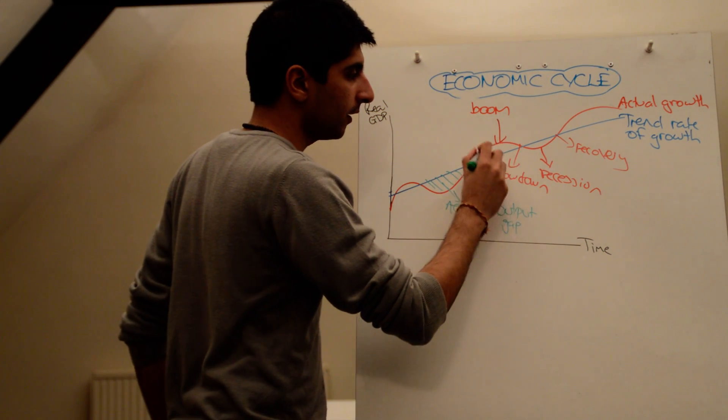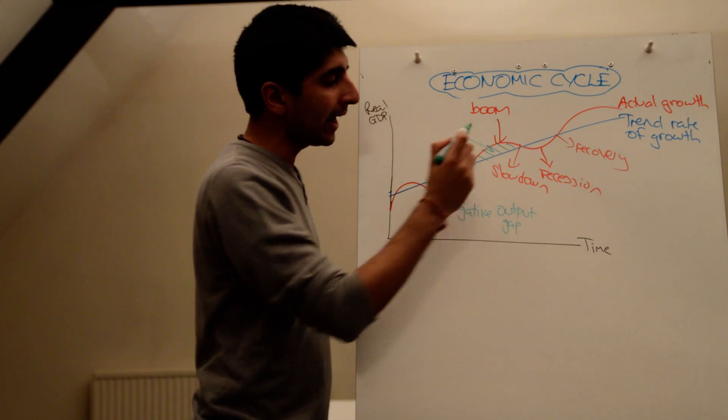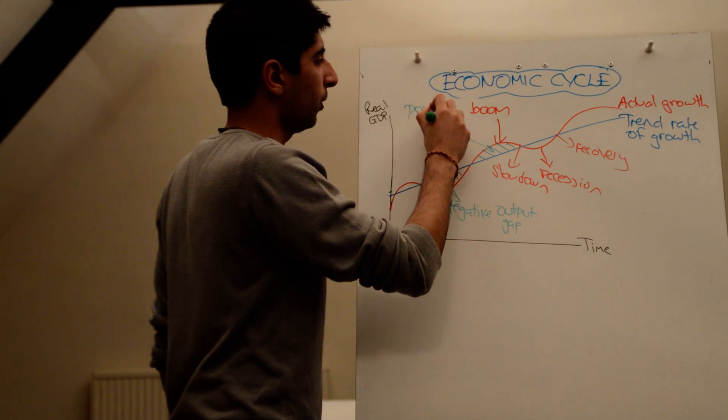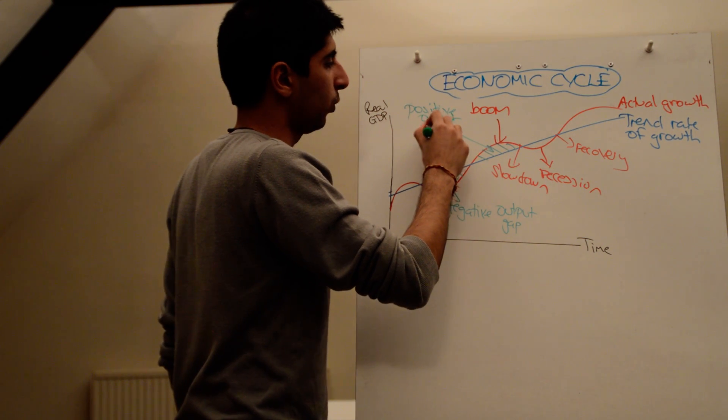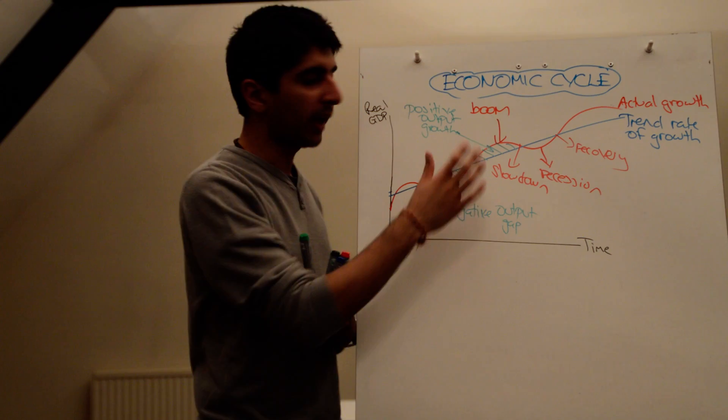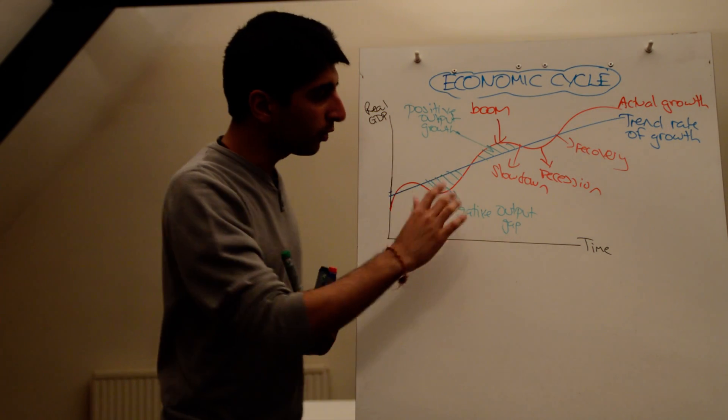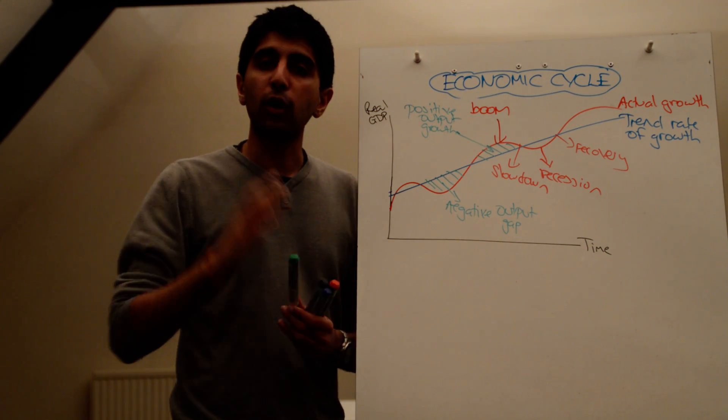But also you can get to a point of growth where actual growth is more than potential growth, in which case you have a positive output gap. So in the short term, you might have workers that are working ridiculous hours, unsustainable hours. You might have capital machinery that's working at full pelt. These are not sustainable. So in the short term, you might be able to produce more than your productive capacity, but that can't be sustained.